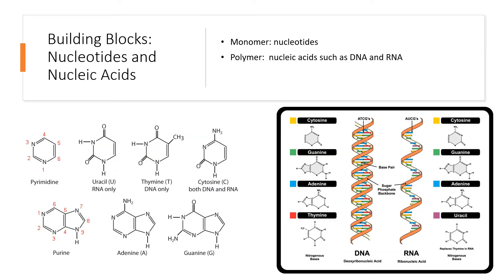Next we have nucleotides and nucleic acids. The monomers are nucleotides, and there are five different types — three belonging to the pyrimidine group and two to the purine group. These nucleotides come together to form nucleic acids such as DNA, which contains our genetic code, and RNA, one of whose functions is to code for protein.